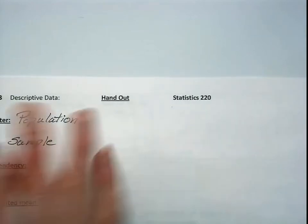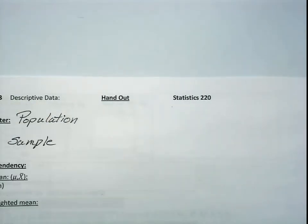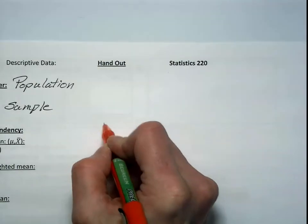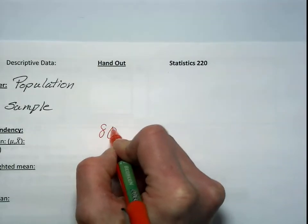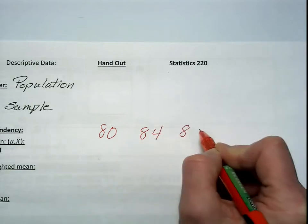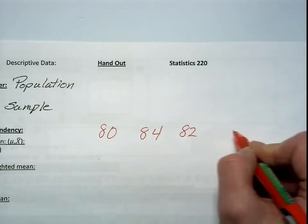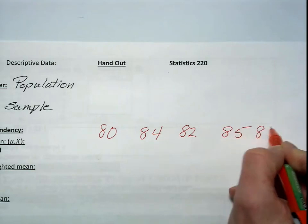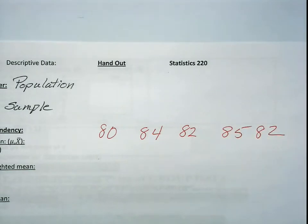Now I'm going to give you five values, and these five values are not on your PowerPoint, it's a different example. So we have five values, let's say the weight of a box of cereal: 80, 84, 82, 85, and 82 again.